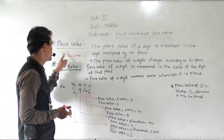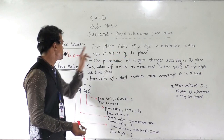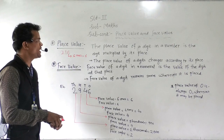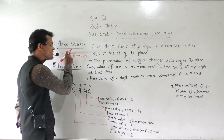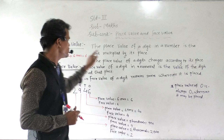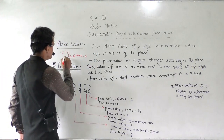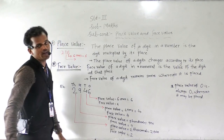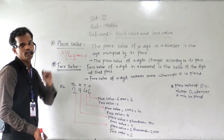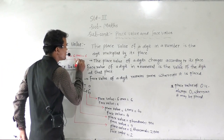In this number 6 comes at the ones place. We learned the definition of place value — the place value of a digit is the digit multiplied by its place. So this 6 comes at ones place: 6 multiplied by 1 is equal to 6. Then this 1 comes at tens place, so 1 into 10 is equal to 10.